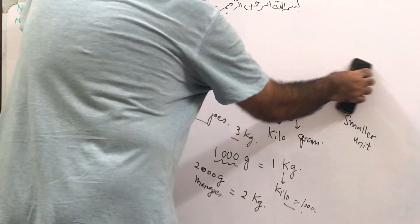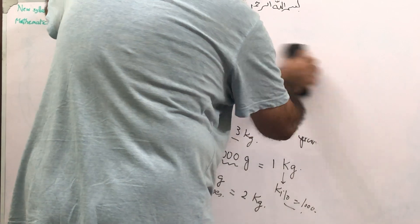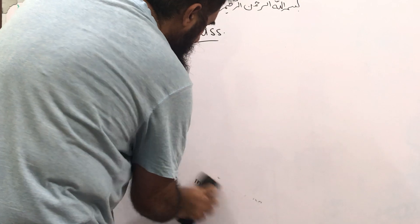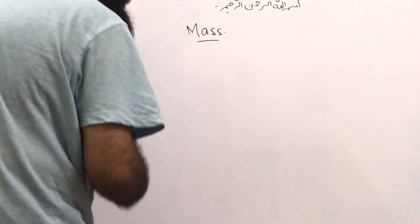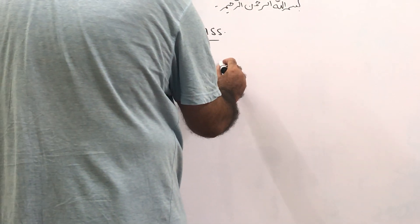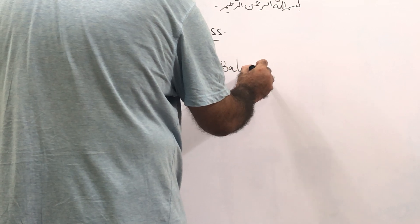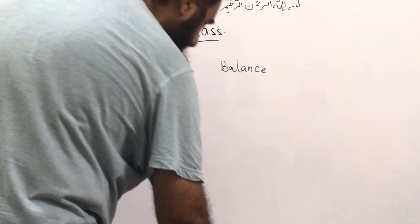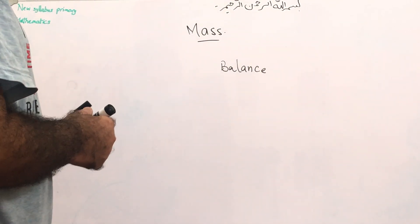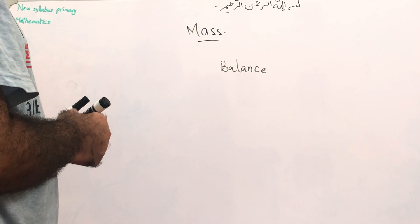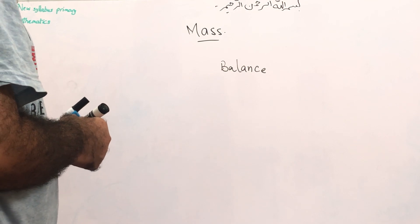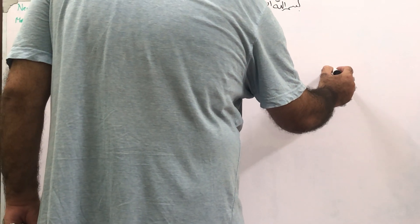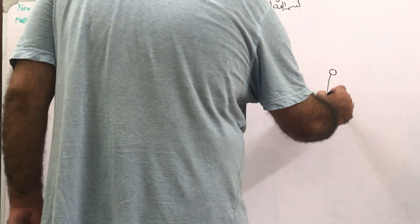How do we measure mass? Mass is measured with the help of a balance. We use a measuring balance. When you visit a fruit shop, you have seen a balance like this — it is also shown in your notebook as a diagram.